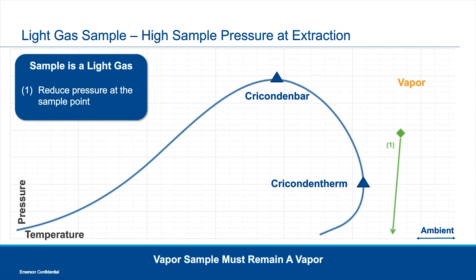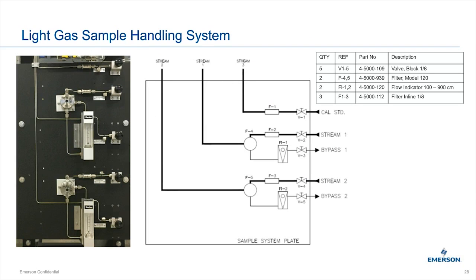For a light gas, it's one of the easiest sample systems to design. You're in the vapor phase and not particularly close to the phase curve, so you can strictly do pressure reduction without worrying about hydrocarbon dropout. A typical sample handling system for this case includes a 2-micron filter and membrane filter, keeping with the five principles of removing contaminants and free liquids. A bypass with flow indicator is recommended to maintain differential pressure and continuously sweep free liquids out.